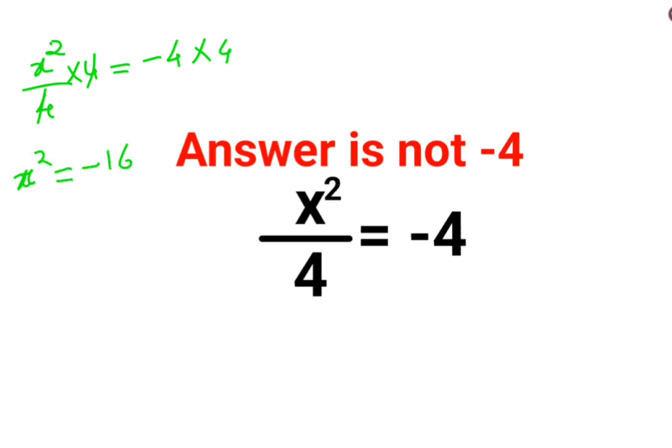Now in indices or in taking square roots, whenever you have a negative number, let's say -16 can be written as 16 × -1.